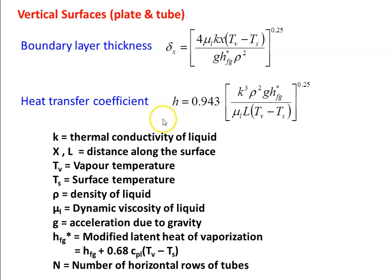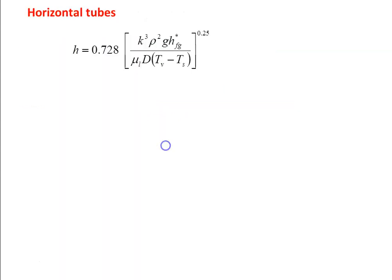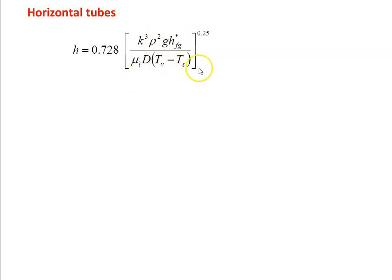N is the number of horizontal rows of tubes. For horizontal tubes, the heat transfer coefficient is: h = 0.728 [k³ ρ² g hfg* / (μl · D · (Tv − Ts))]^0.25, where D replaces L compared to the vertical surface formula.